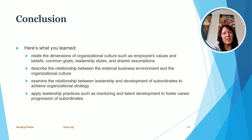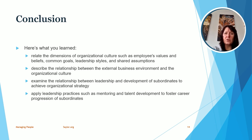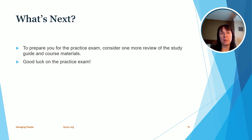As we conclude this unit, let's take a look at what we talked about and tie those topics to our learning objectives. We related the dimensions of organizational culture — such as common goals, beliefs, leadership styles, and assumptions. We described the relationship between the external business environment and business culture. We talked about the relationship between leadership and development of subordinates to achieve organizational strategy, and leadership practices such as mentoring and talent development to foster the progression of subordinates. I definitely recommend you do another review of the material, especially anything you found challenging, before taking the practice exam. Best of luck!